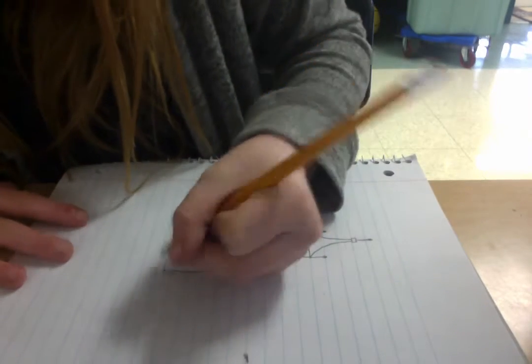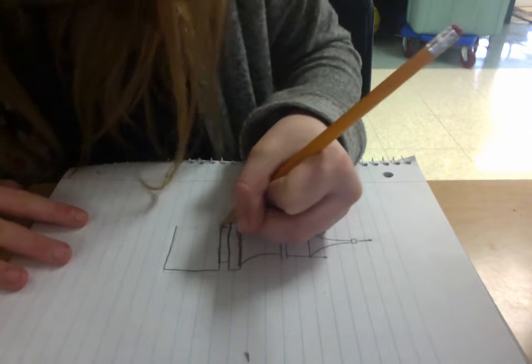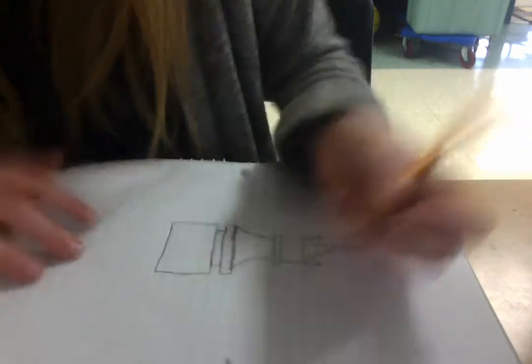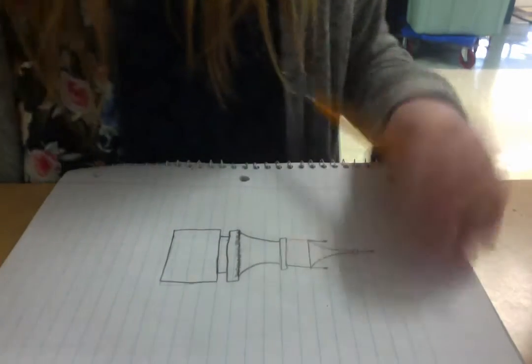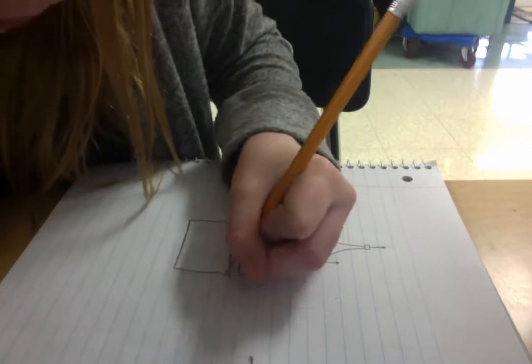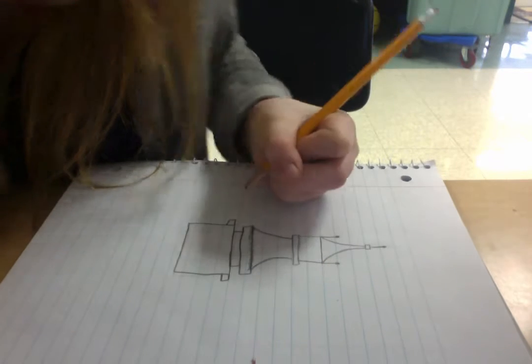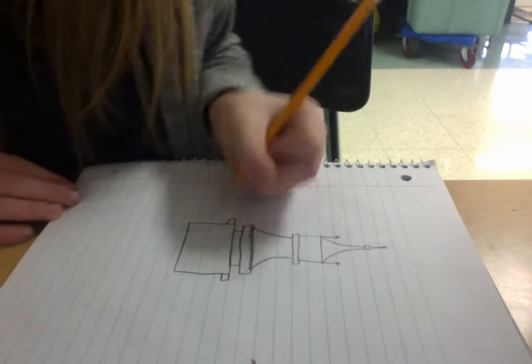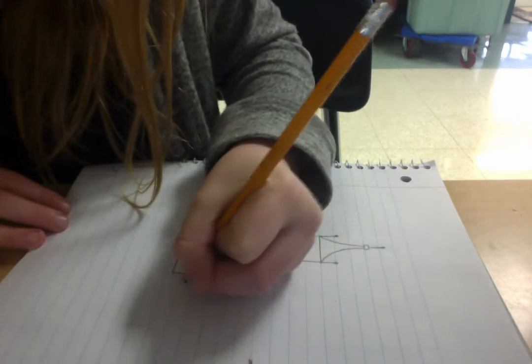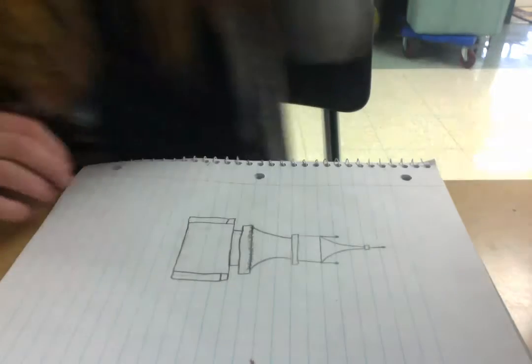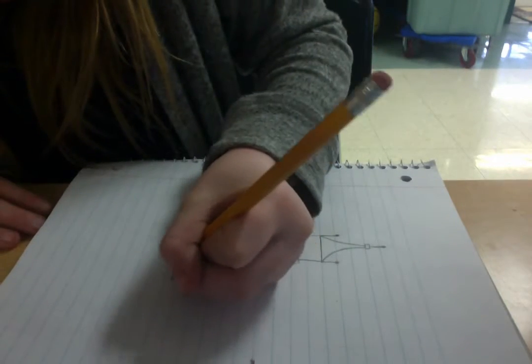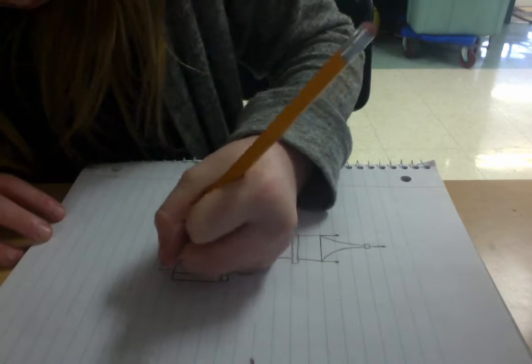You can also check out my website on howtodrawfamouslandmarks.weebly.com where you will find out how to draw a bunch of other things. I also have more videos. Now we're going to make another box that pops out over here, then lines going down connecting to there, and going across.